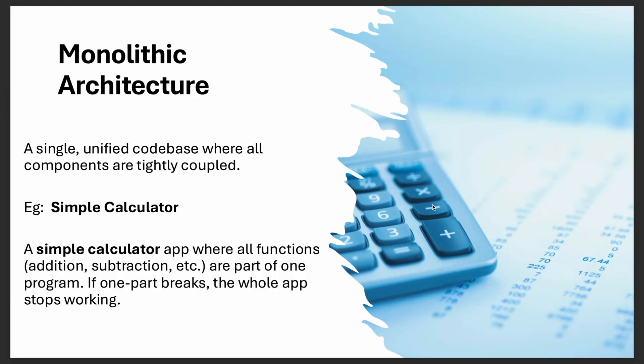First is monolithic architecture. This is a single unified codebase where all the components are tightly coupled. For example, a simple calculator app where all functions including addition, subtraction, etc. are part of one program. If one part breaks, the whole app stops working because it is tightly coupled into a unified codebase.